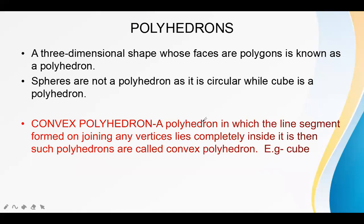What are polyhedrons? A three-dimensional shape whose faces are always polygons is known as a polyhedron. A sphere is not a polyhedron as its face is circular. A cylinder is also not a polyhedron because its lateral face is circular, while a cube is a polyhedron because all its faces are squares. A convex polyhedron is one in which the line segment formed by joining any two non-adjacent vertices lies completely inside it.